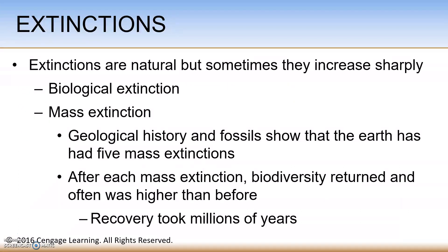Because extinction of a species typically takes a very long time, it's not easy to document. It's estimated that we have identified only about 2 million of the world's estimated 8 million to 100 million species. Biological extinction occurs when a species can no longer be found anywhere on Earth. Mass extinction has been documented from a geological history of fossils that have been found. Our history from a geological perspective indicates that there have been five mass extinctions.